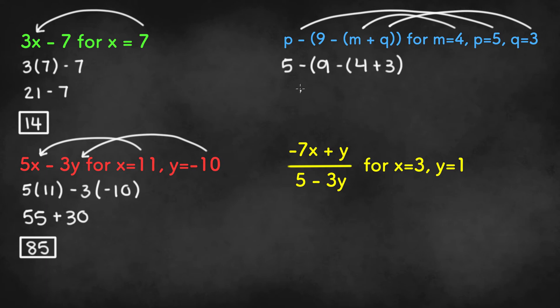To simplify this, we start from the innermost parenthesis. We have 5 minus 9 minus, and then 4 plus 3, which is 7. Now we get 5 minus 9 minus 7, and 9 minus 7 is 2. So finally, 5 minus 2 is 3.